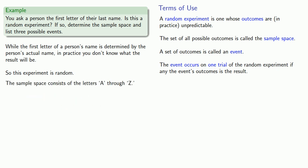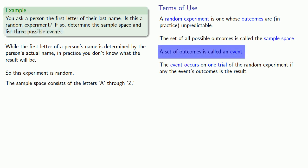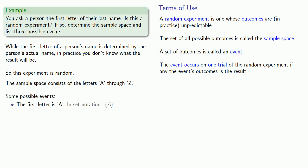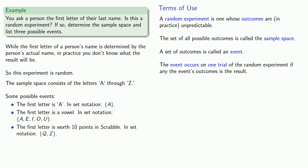If I want to list three possible events, I can take a set of outcomes. Some possible events might be: the first letter is an A, which we can write in set notation. Another possible event is the first letter is a vowel — in set notation, the set {A, E, I, O, U}. And maybe we can get creative: the first letter is worth 10 points in Scrabble, which in set notation includes the letters Q and Z.